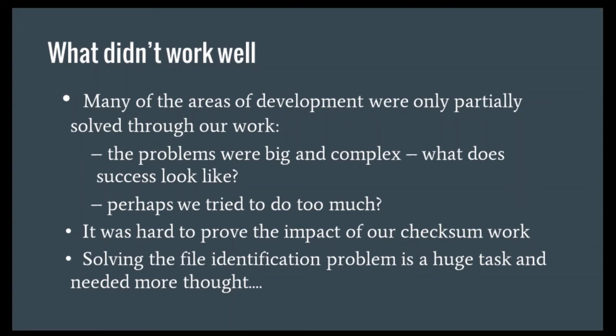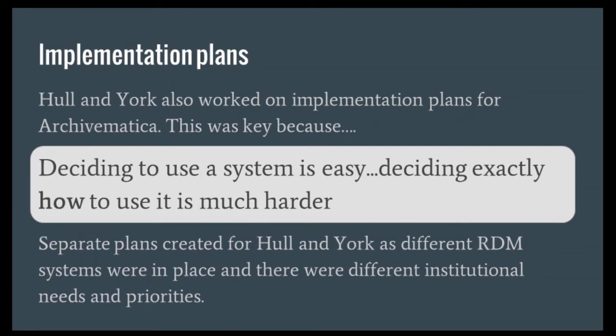In phase two we also worked on our own implementation plans — planning how we would actually implement Archivematica at Hull and York. This is really key because deciding to use a system is quite easy, but deciding how to use it is much harder. There are lots of decisions about how to configure it, which systems it talks to, how data flows through the system, and where humans need to interact. We created separate implementation plans for Hull and York — they were different because we have different RDM systems in place despite both having Fedora and Hydra, and we had different institutional needs and priorities. Both implementation plans are available in our phase two report.